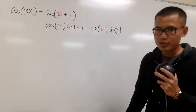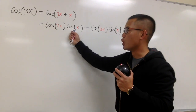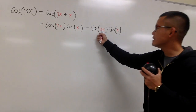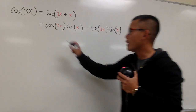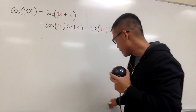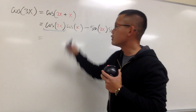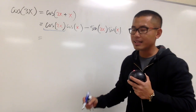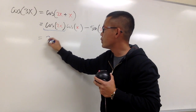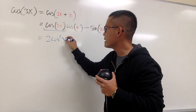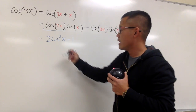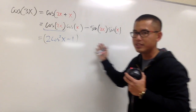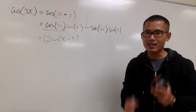Remember, we want to write everything in terms of cosine x. That means we have to fix cosine 2x, the sine 2x, and the sine x terms. For the first term, we have cosine of 2x, which is a double angle situation for the cosine. The identity we can use here is 2cos²x minus 1, and the reason I'm using this version is because I want everything in terms of cosine x.